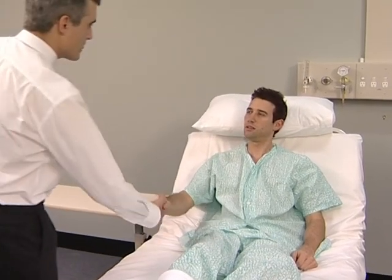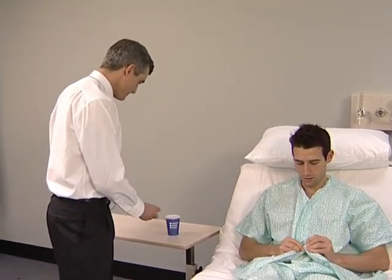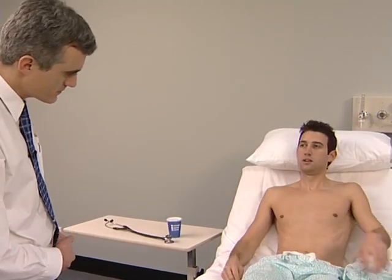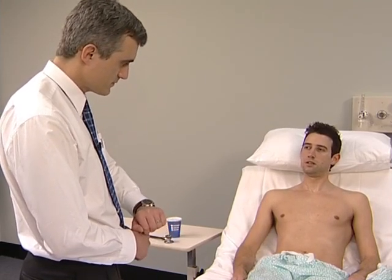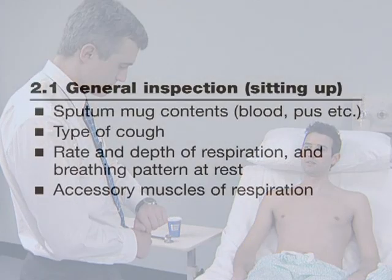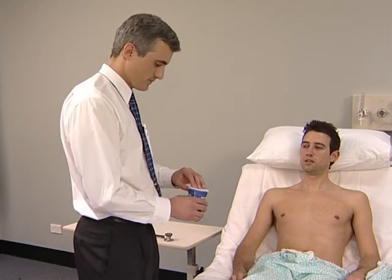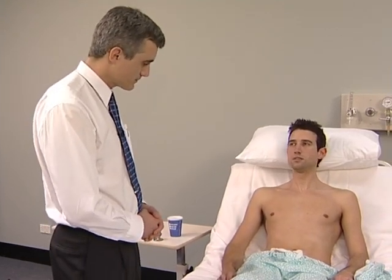For the respiratory system examination the patient should sit up in bed undressed to the waist. The general inspection should begin as the patient enters the room or begins undressing. The examiner stands back to look for signs of dyspnea, the rate and depth of respiration, and the use of the accessory muscles of respiration. Look at the bedside table for the presence of a sputum mug that may be conveniently placed for inspection. Ask the patient to cough and listen.